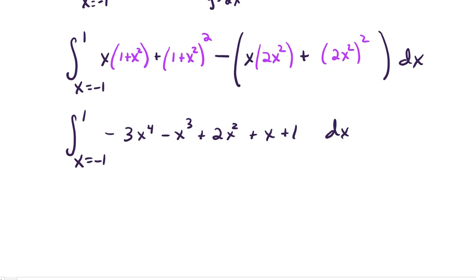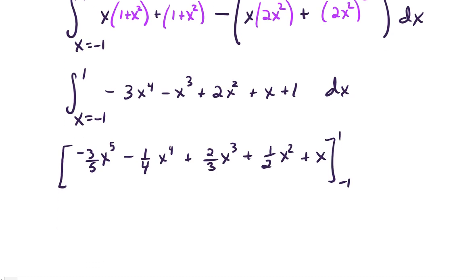...we do the antiderivative with respect to X, and we have a negative 3/5ths X to the 5th minus 1/4th X to the 4th plus 2/3rds X cubed plus 1/2 X squared plus X. And that's going to get evaluated from negative 1 to 1. And if you plug that in, your final answer turns out to be 32 over 15.